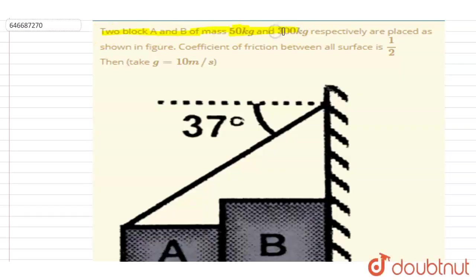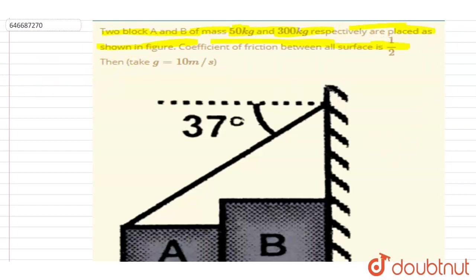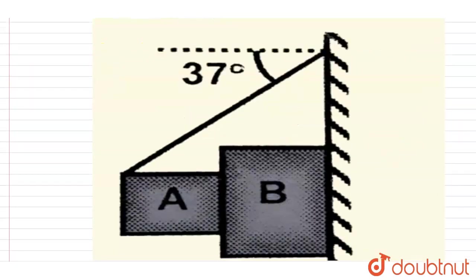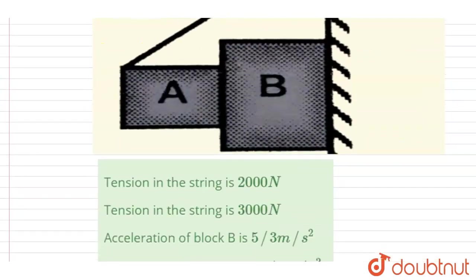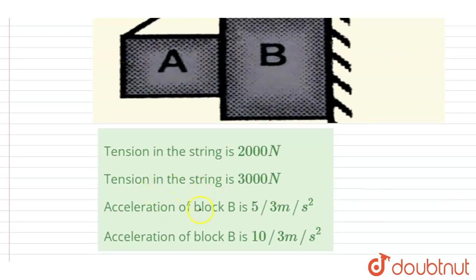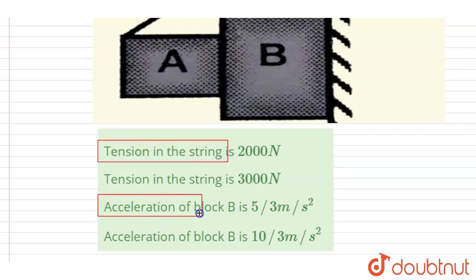Hello everyone. Two blocks A and B with masses 50 kg and 300 kg are placed as shown in the figure. The coefficient of friction between all the surfaces is one-half. You have to check which option — A, B, C, or D — is correct regarding the tension in the string and the acceleration of block A and block B.